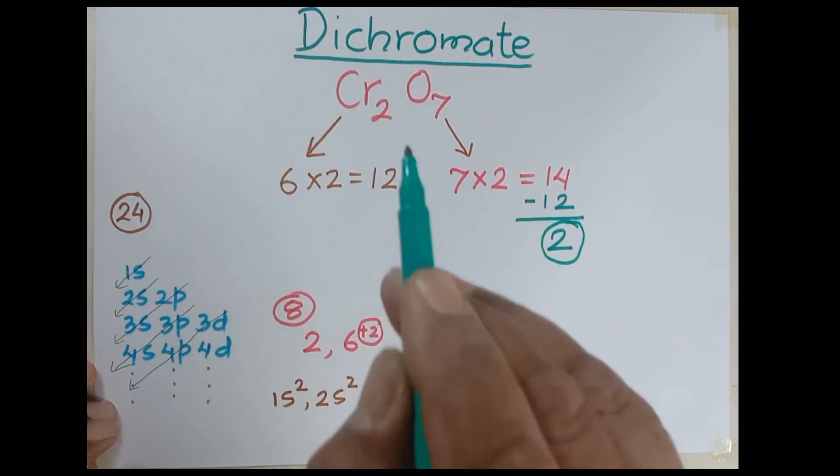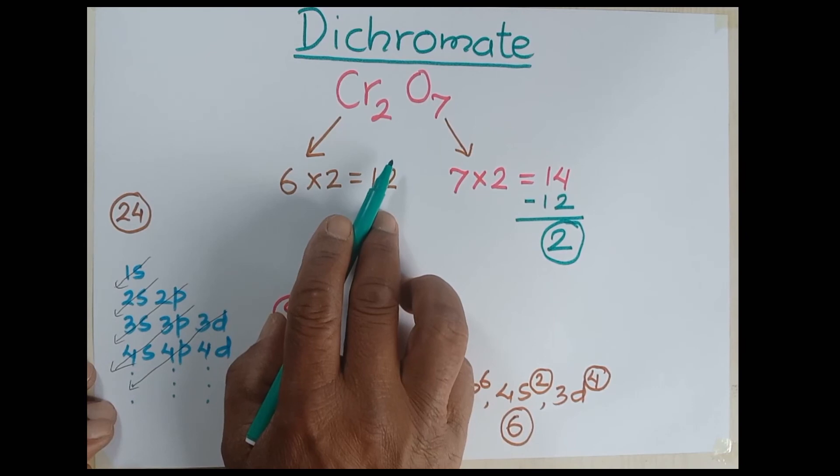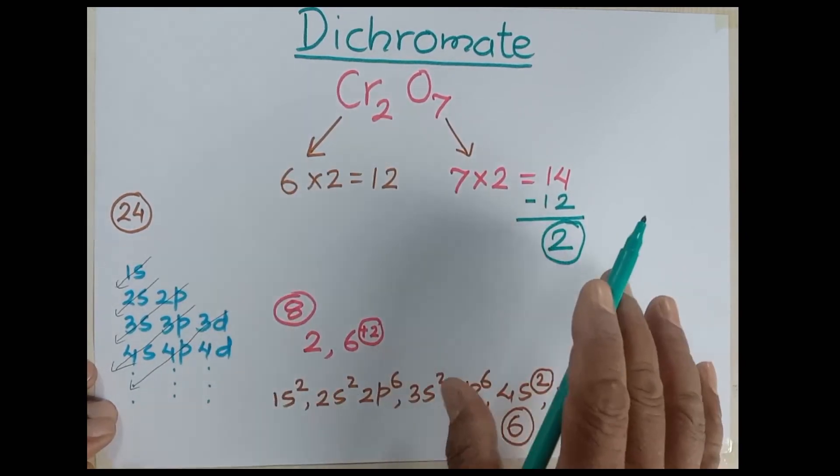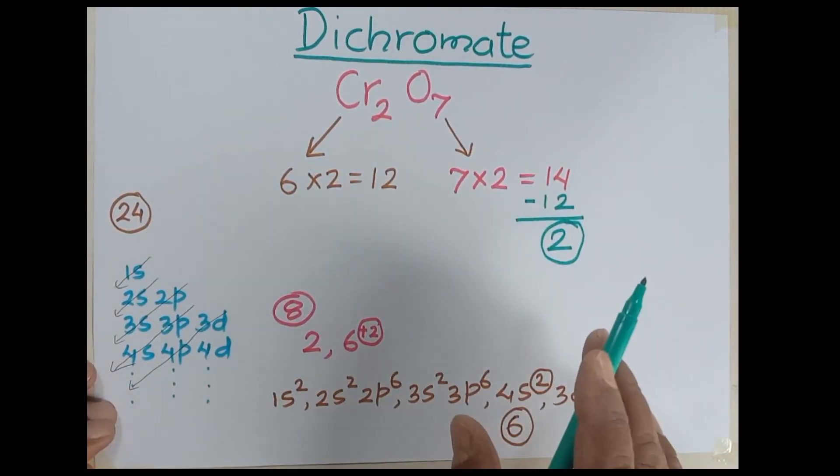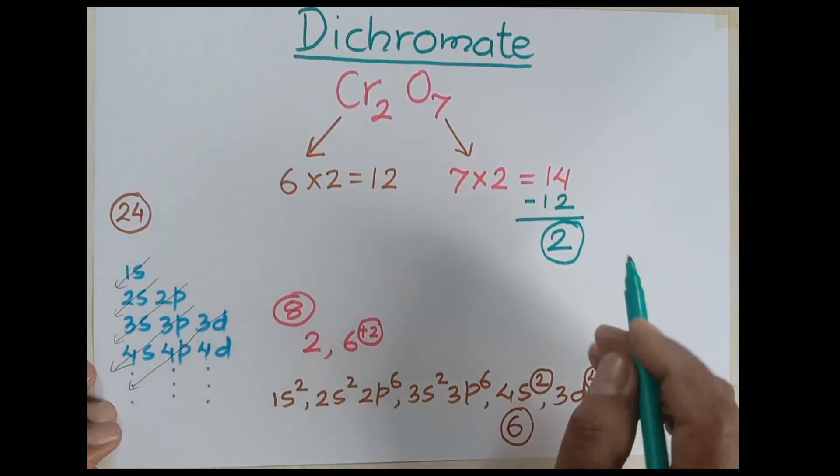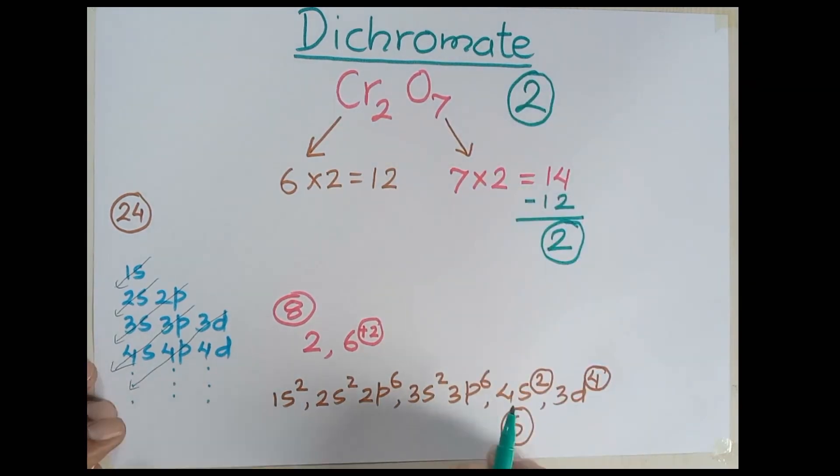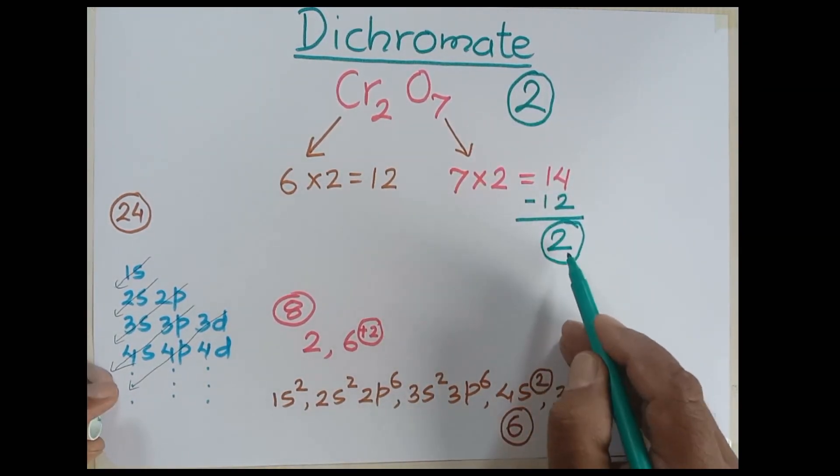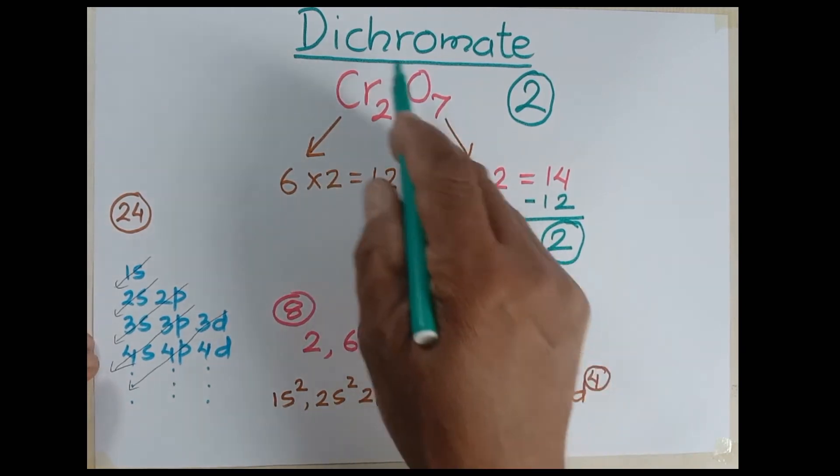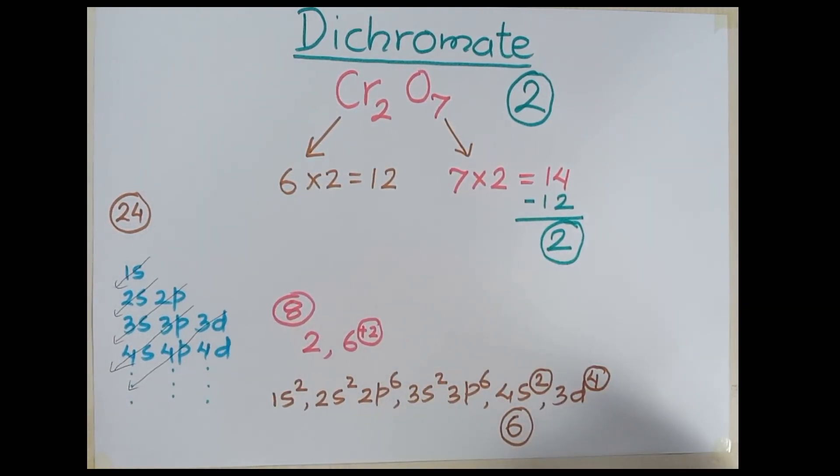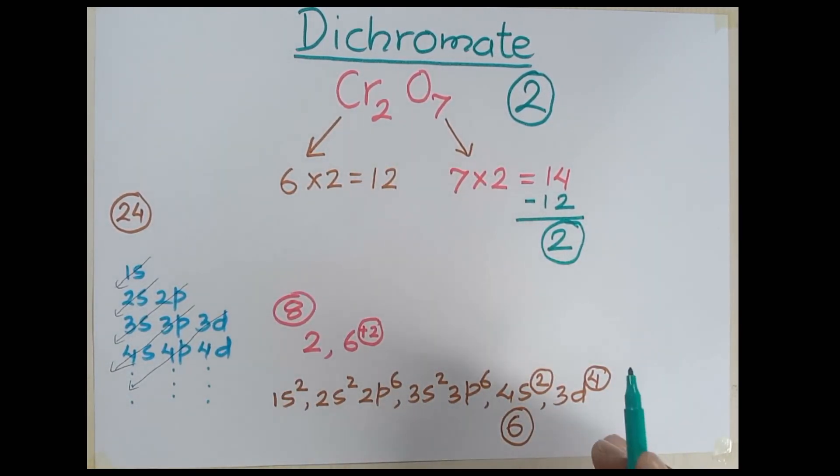That's why this radical's valency is declared as two. We can declare its valency as two because it requires two more electrons to fulfill its outermost shells. This way we can declare the valency of dichromate. Probably this is one of the easiest methods to declare the valency of dichromate.